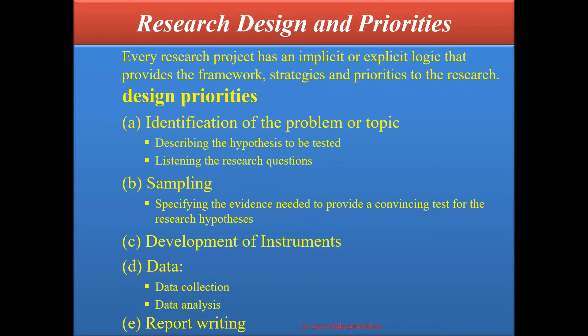The priorities of research design follow a set of steps. Every research project has an implicit or explicit logic that provides the framework, strategies, and priorities to the research design. The first priority is identification of the problem or topic, describing the hypothesis to be tested, and arranging the research questions.